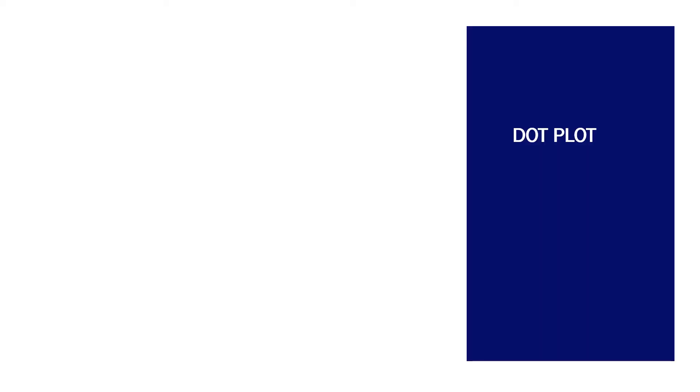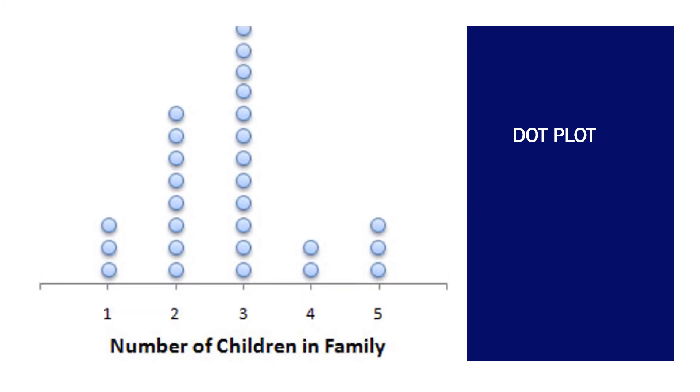In a dot plot, I always sort them in order. After I sort them in order, I take a horizontal line, and above that, I use dots to represent each frequency. It looks like there are three families with one child and two families with four children. This will describe the whole data with dots, and this is known as a dot plot.